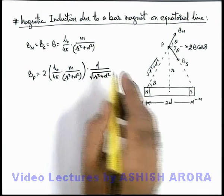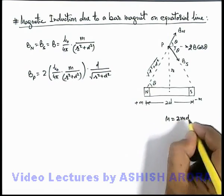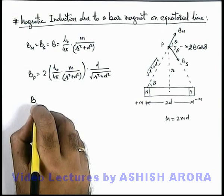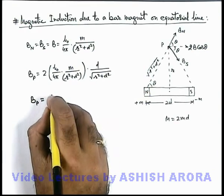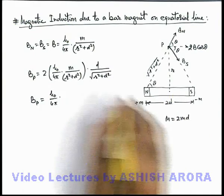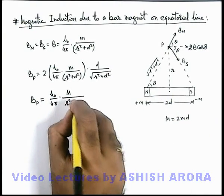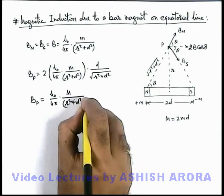m into 2d we can write as the magnetic moment of magnet which is 2md here. So this magnetic induction B_P we can write as μ₀ over 4π, 2md we can write as M divided by r² plus d² to power 3/2.